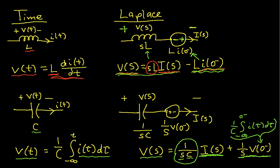The 1/S comes from the fact that when taking the Laplace transform of an integral using the one-sided Laplace transform, I get 1/S times the initial value. So in circuit form, 1/(SC) becomes the impedance of the capacitor, and (1/S)·V₀ is a voltage source due to the initial voltage across the capacitor. Hopefully this made some sense — let's go through an example of how to use this.